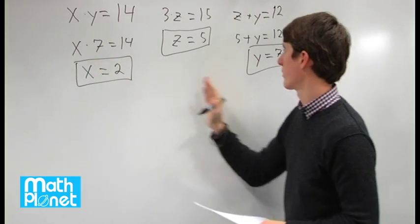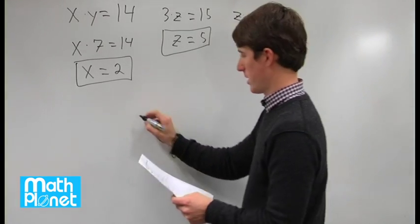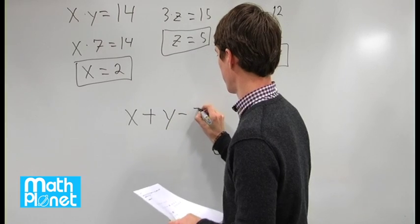Great, so we found all three variables, x, y, and z. Now we need to find x plus y minus z,